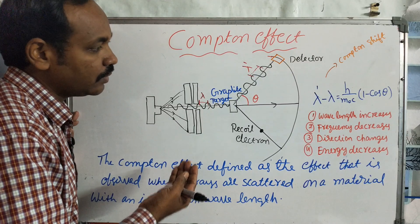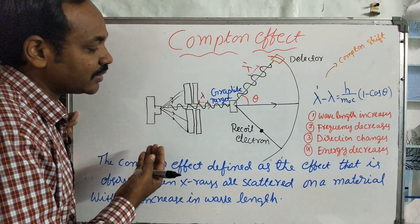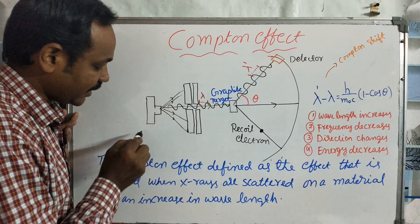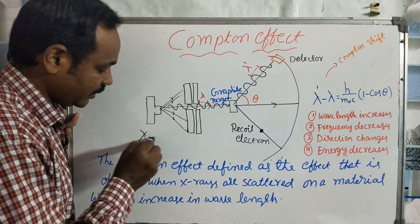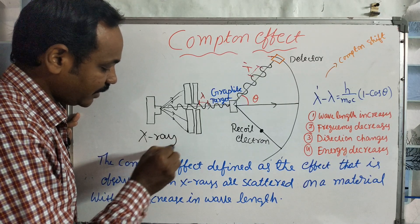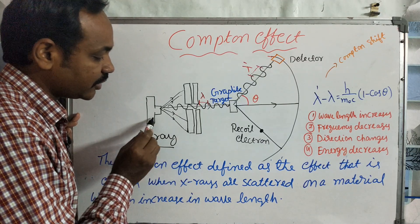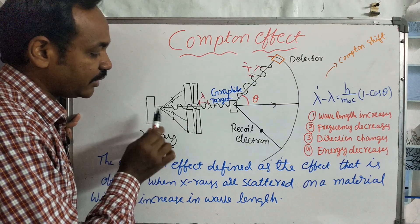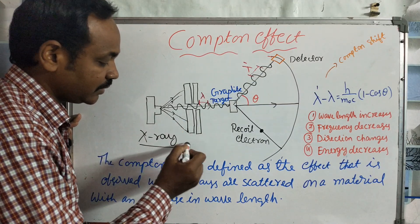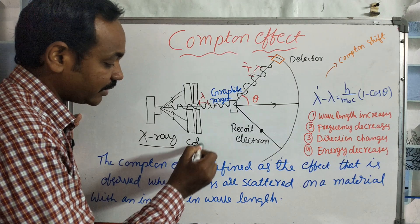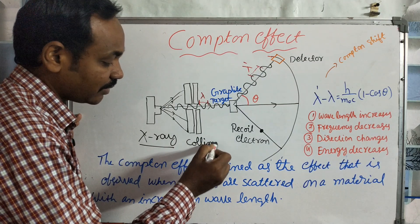Compton's experiment used an X-ray tube. The X-ray tube emits X-rays, which then pass through a collimator. The collimator narrows the beam to a fine point before it strikes the target.